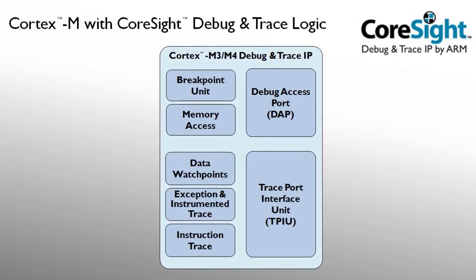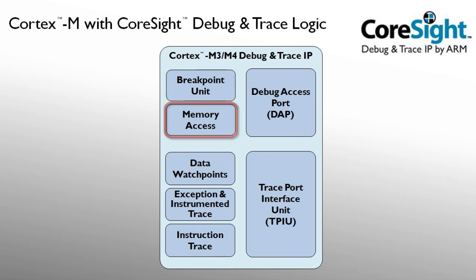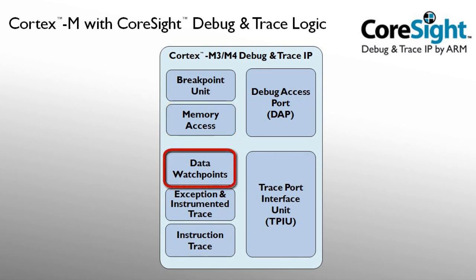ARM Cortex-M processors integrate the CORSITE debug and trace logic that offers the following features. The breakpoint unit allows run-stop debugging with up to 8 breakpoints. Memory access allows monitoring of variables, buffers and peripherals while application code is running at full speed. Data watchpoints trace memory accesses with data value and program address, and optional program execution can be stopped.